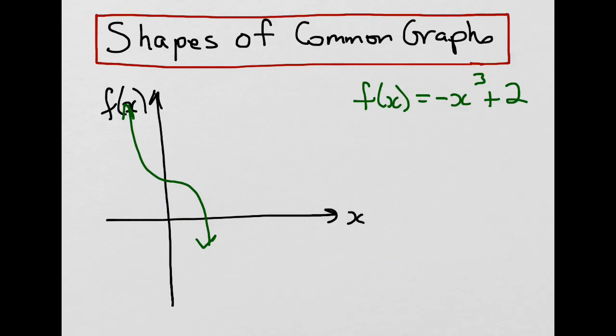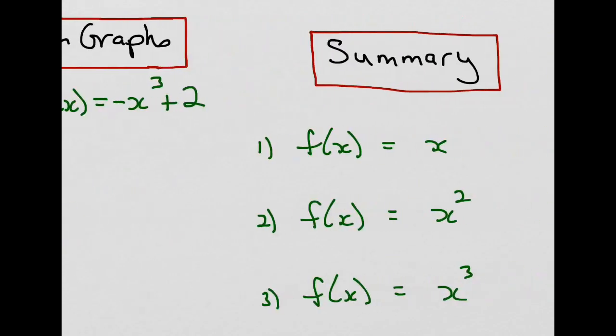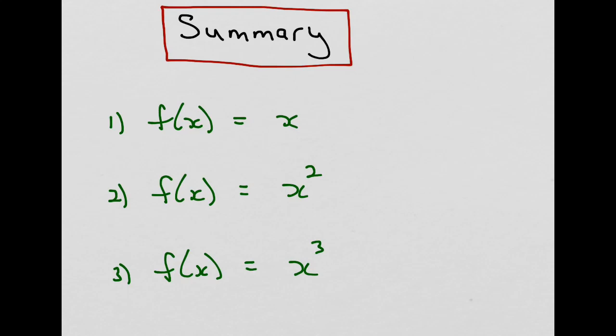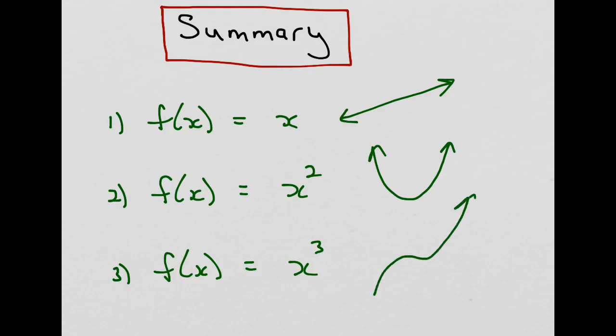Let's summarize what we know about these three types of common graphs. If f(x) = x, degree of 1, it's going to be a straight line. If f(x) = x², it's going to be a parabola shape. And if f(x) = x³, it's going to be some kind of snake-type curve.